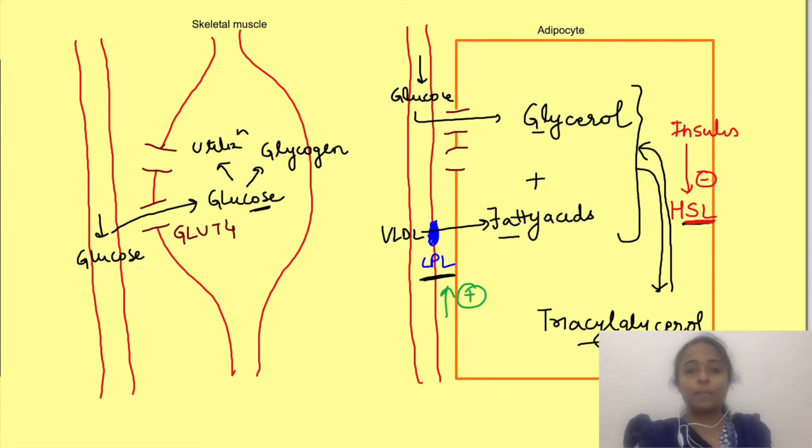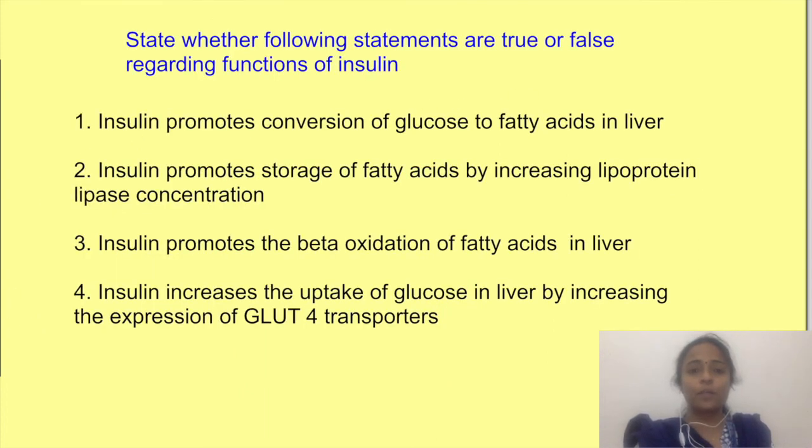Well now let's come back to our original question. In this question, first and second statements are correct. We have seen that glucose is not only converted to glycogen but also to fatty acids in liver, and then fatty acids are transported as triacylglycerols in VLDL to adipose tissue where lipoprotein lipase facilitates the entry of fatty acids into the tissue.